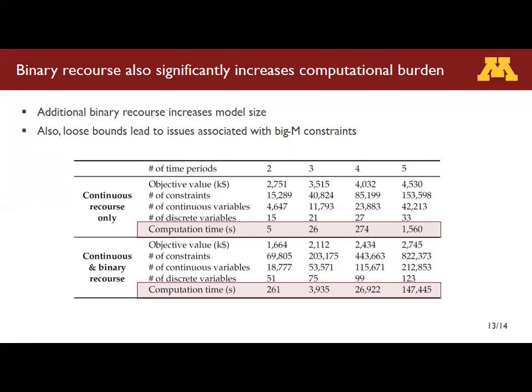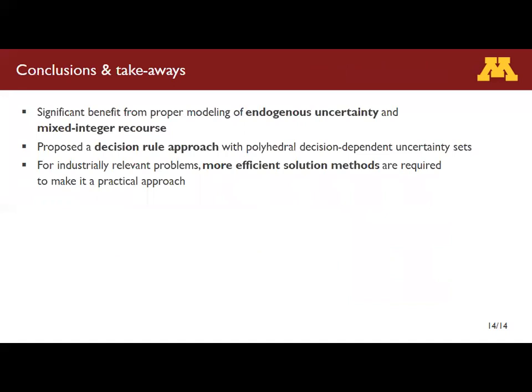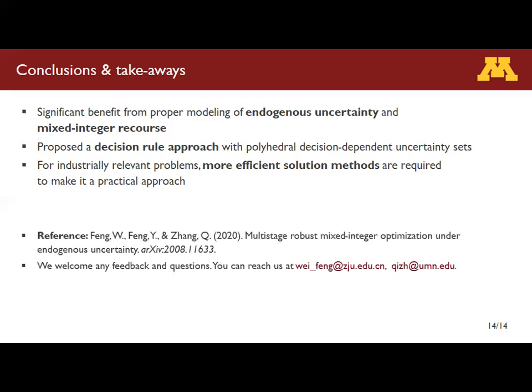Finally, let me conclude with a brief summary. The key takeaway is that there is significant benefit from properly modeling endogenous uncertainty with mixed integer recourse. We proposed a decision-rule-based approach with polyhedral decision-dependent uncertainty sets and reformulated the problem into a mixed integer linear program. However, there are still computational limitations. For industrially relevant problems, we need to develop more efficient solution methods. Thanks for listening. A preprint of our work is available on arXiv. I will be happy to take any questions — you can email us at either of these two email addresses. Thank you.